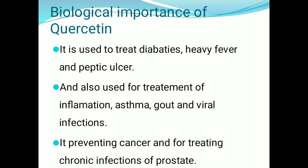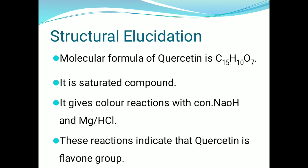Quercetin is also used for preventing cancer and for treating chronic infections of the prostate gland. These are the biological uses of quercetin. Now we discuss about the structural elucidation of quercetin.